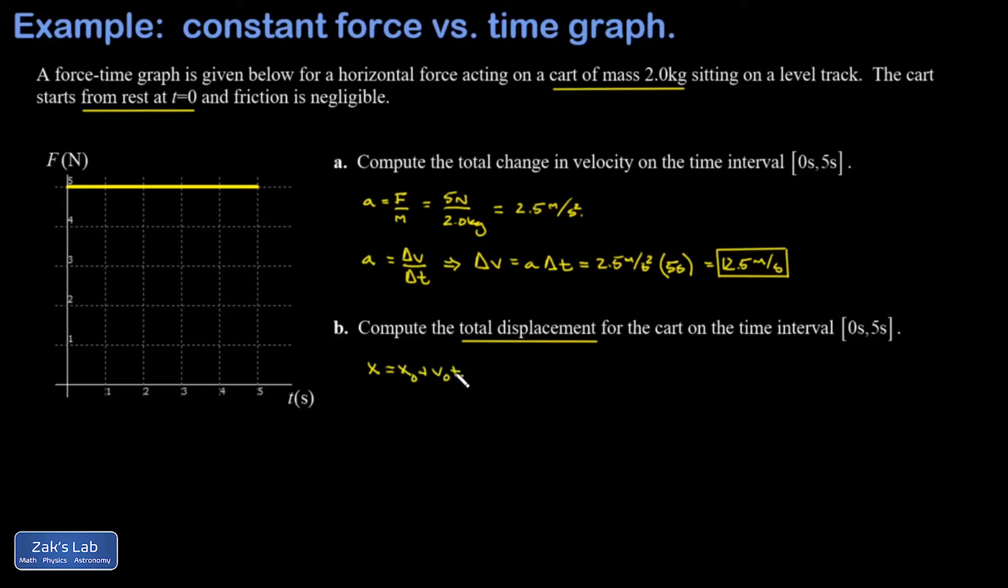We don't lose anything by assuming we start at the origin here, so x naught is zero. And we were told the cart started from rest, so v naught equals zero. So all I get is that one half a t squared term.